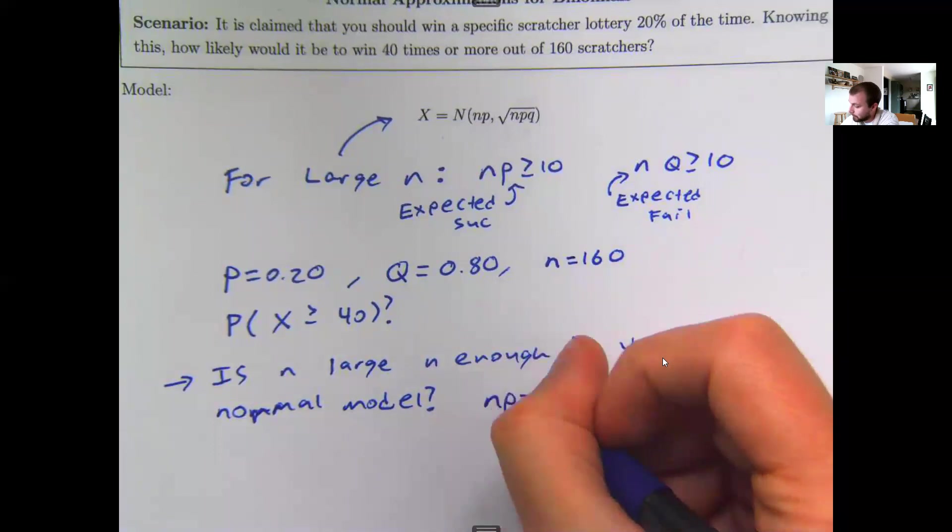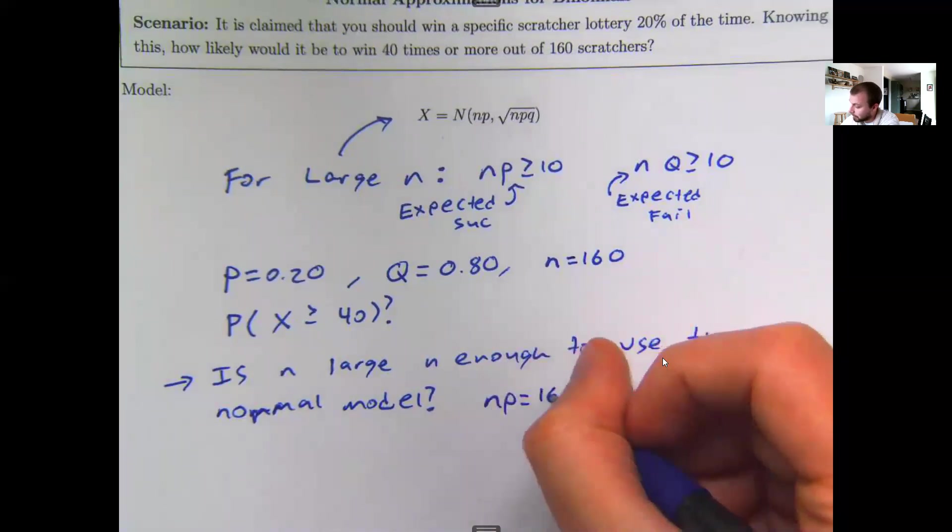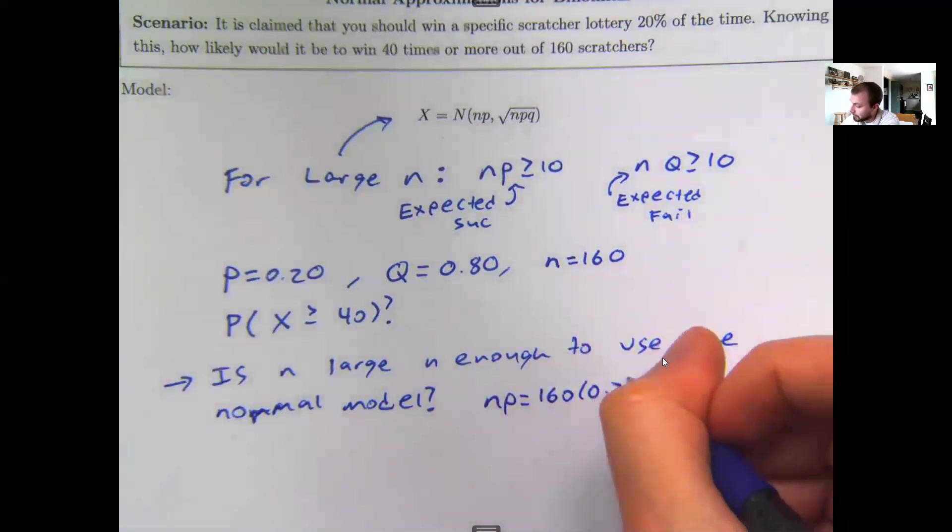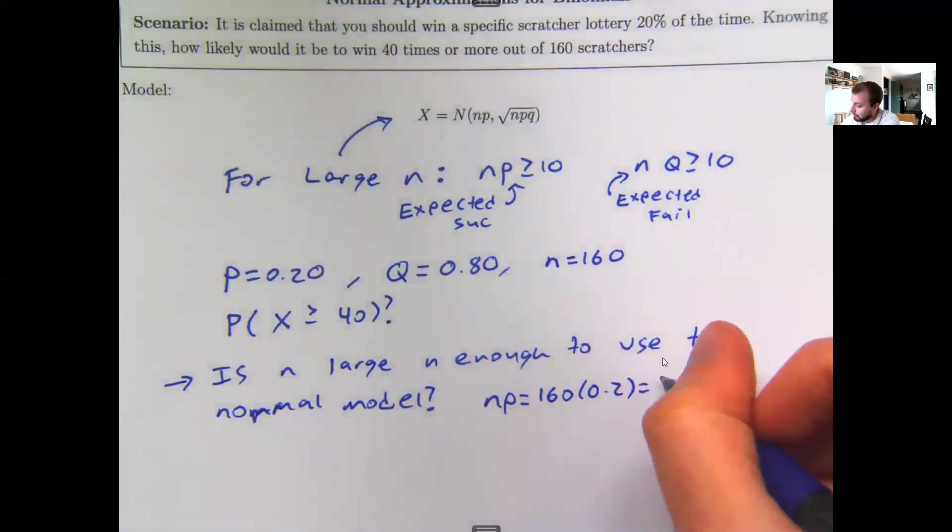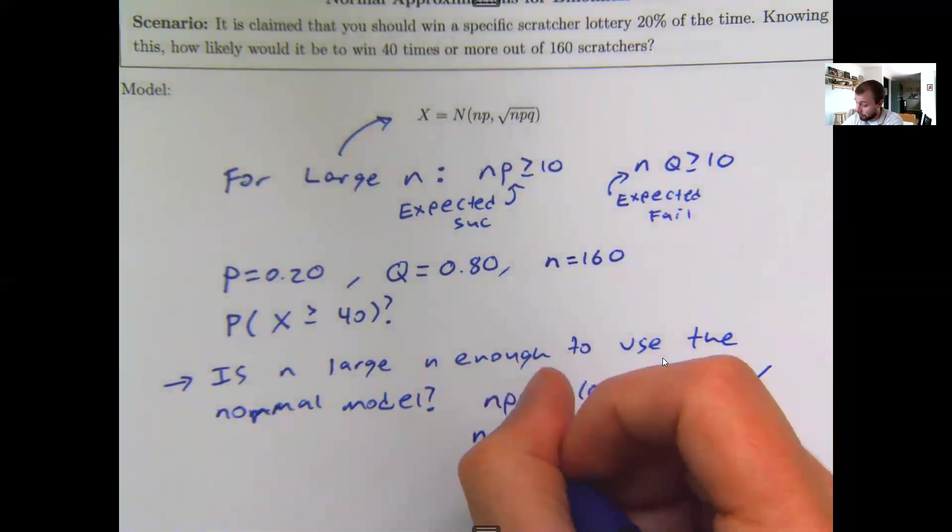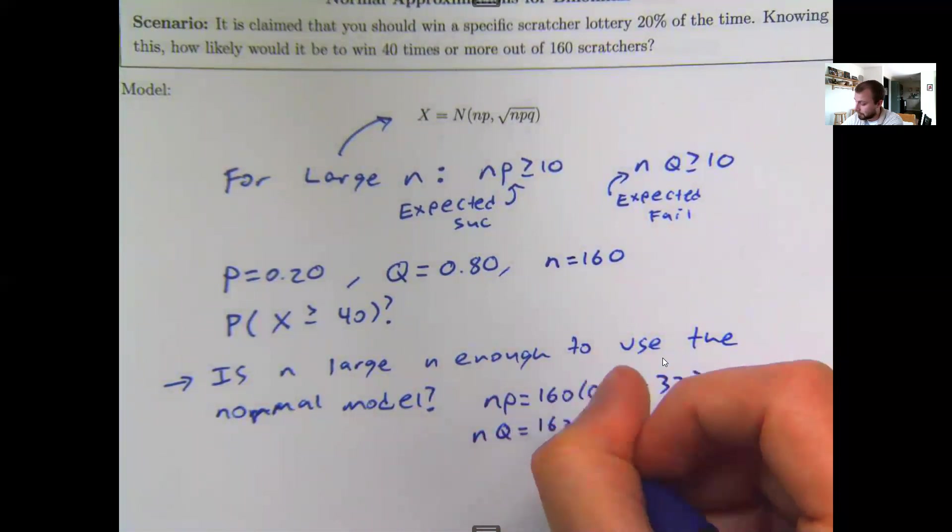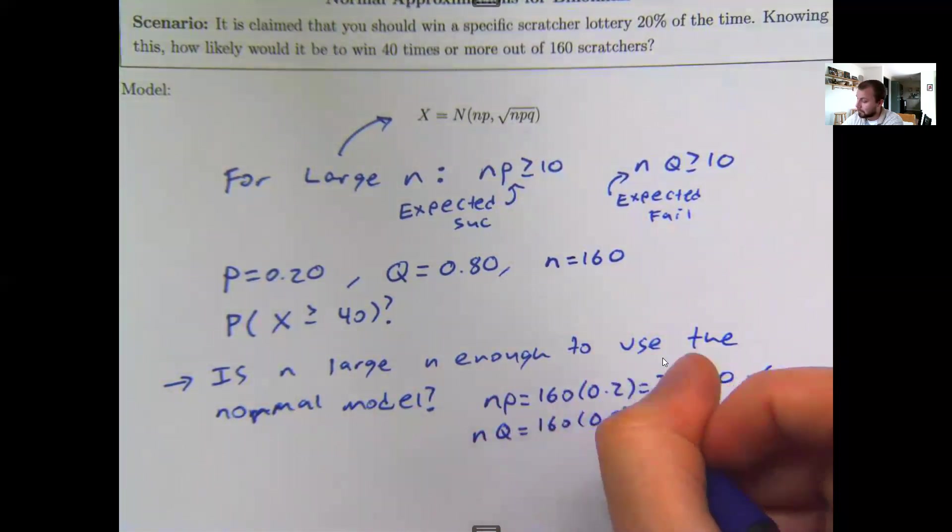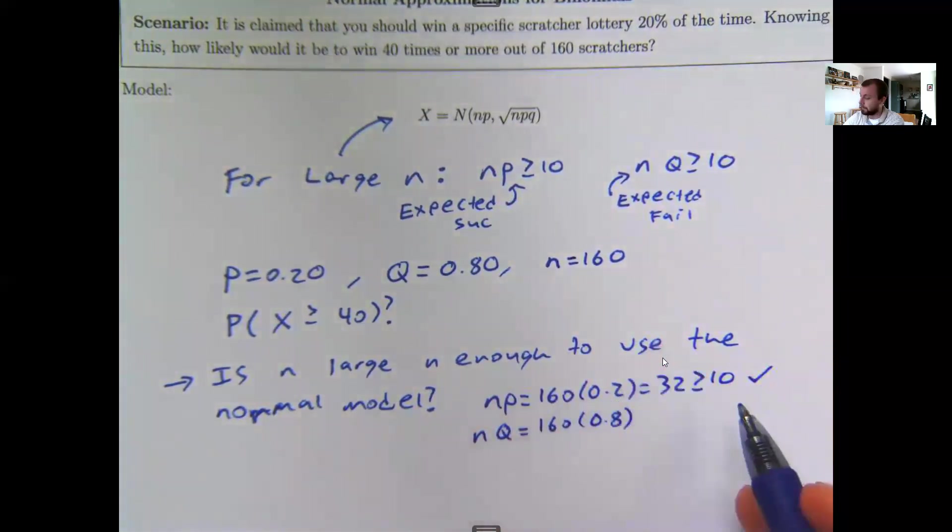Let's check. I'm going to do n times p. I have 160 trials times my 20% success rate, and that gives me 32 anticipated wins. That's bigger than 10. I'm going to do n times q, 160 times 0.8. Now this is larger than the two probabilities, so if this is bigger than 10, this is definitely going to be bigger than 10 as well. So I'm in the clear.